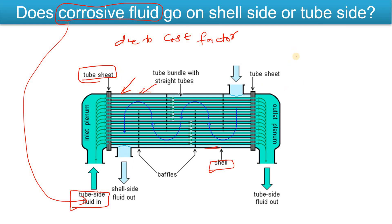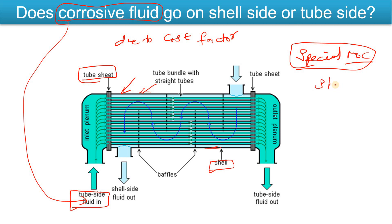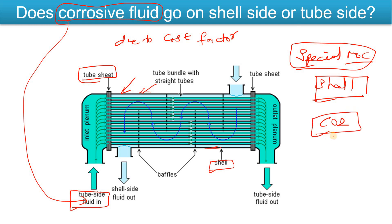That's why corrosive fluid should go in the tube side rather than the shell side. For the tube side, you will need to use a special MOC (Material of Construction) that prevents corrosion. If you flow it on the shell side, you would need that special MOC for the entire shell, which increases the cost significantly. For example, in a CO2 compressor, the CO2 most of the time goes in the tube side rather than the shell side.